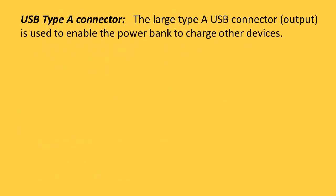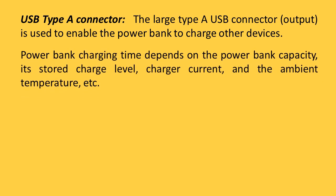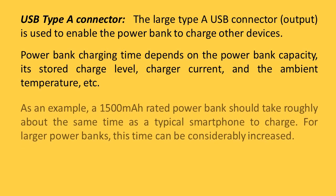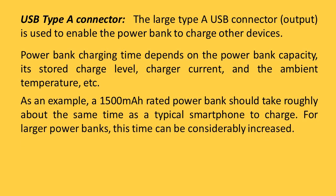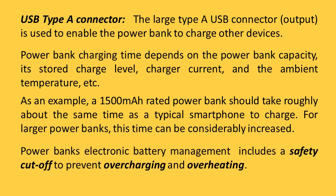The USB Type-A connector — the large Type-A USB connector used at the output — enables the power bank to charge other devices. Power bank charging time depends on the power bank capacity, its stored charge level, charger current, and ambient temperature. As an example, a 1500 mAh rated power bank should take roughly the same amount of time as a smartphone to charge; for larger power banks this time can be considerably increased. Power banks also include electronic battery management with a safety cutoff to prevent overcharging and overheating.